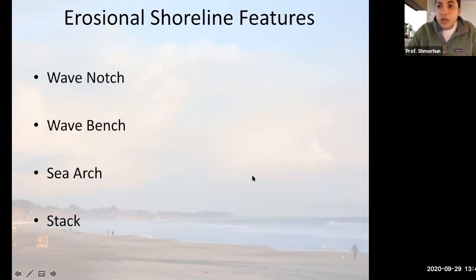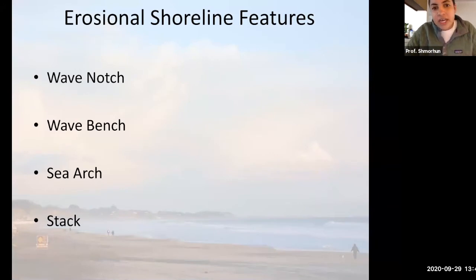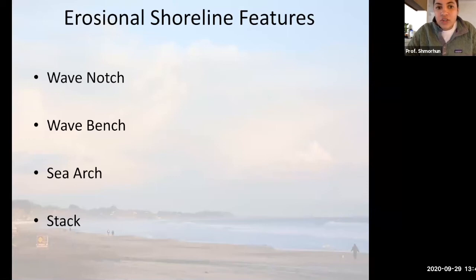Coastal erosion produces a bunch of landforms. There are four main types: wave notches, wave benches, sea arches, and sea stacks.